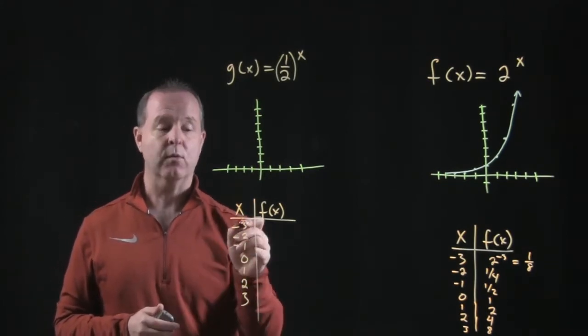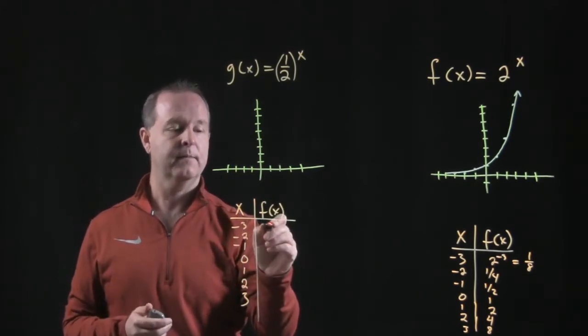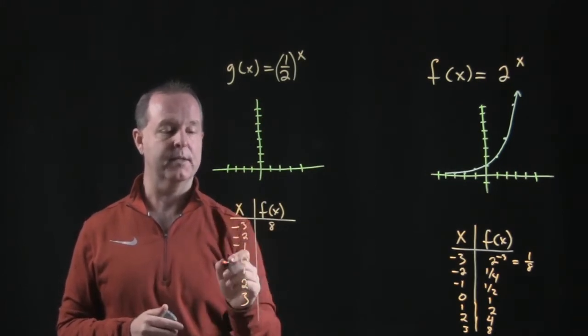If g of x equals negative 3, 1 half to the negative 3 turns out into 2 to the third becomes an 8. So you can verify these on your own. Let me just go ahead and do some math here while you just sit and watch.